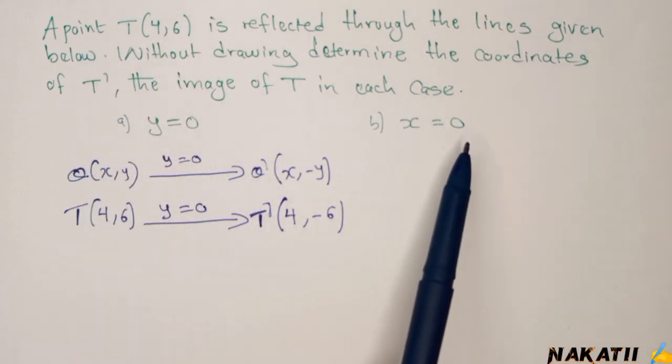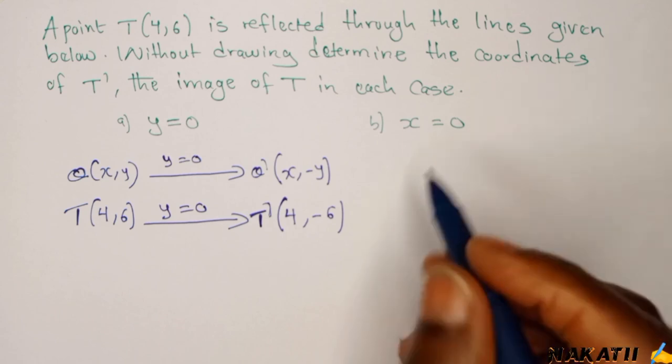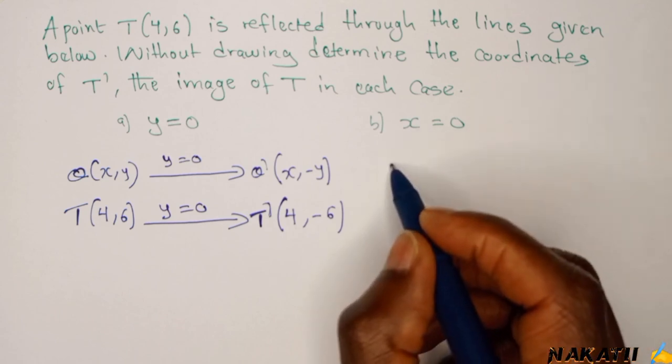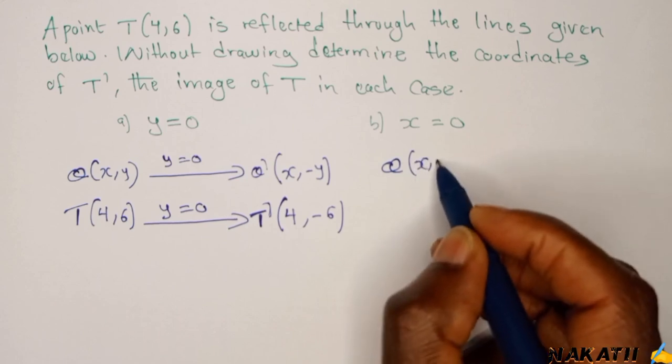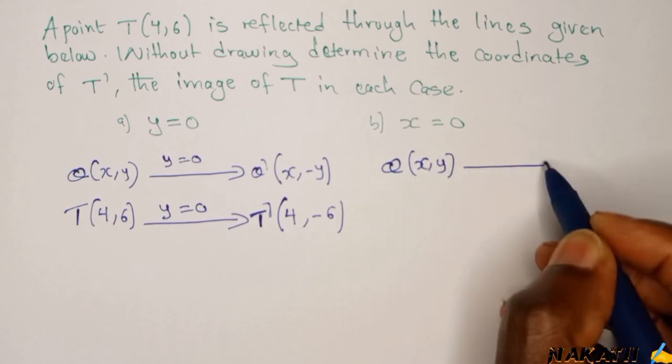If you come to part b, I'm now reflecting the same point on this line, and this is the y-axis. So if you again have that general point Q which is (x,y), and you reflect on the line...